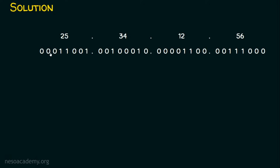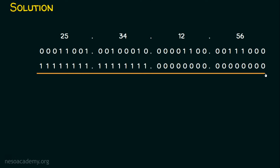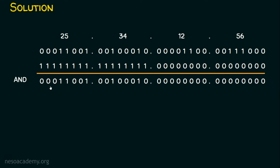When we convert 25 into binary, we get 8 bits: 00011001. For 34, it is 00100010. For 12, it is 00001100. And for 56, it is 00111000. Step 1 is taking the IP address and converting it to binary. Step 2 is the subnet mask — slash 16 means 16 consecutive ones followed by 16 consecutive zeros — giving 255.255.0.0 in decimal. We then perform the bitwise AND operation on these two binary inputs.